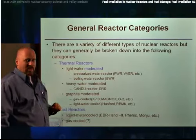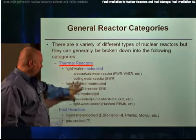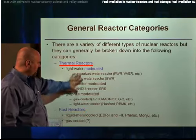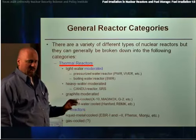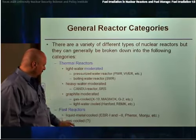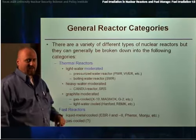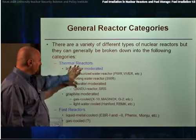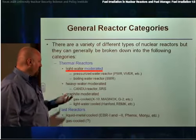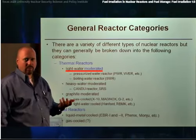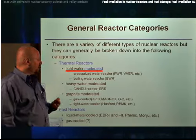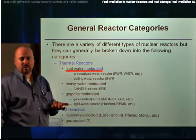Reactors generally break into two main categories: thermal reactors and fast reactors. Thermal reactors principally operate off of neutrons that are moving slowly inside the system. Fast reactors operate off of faster-moving neutrons. In order to slow neutrons down, we use what's called a moderator. The most common moderator used in the world is light water. Neutrons bounce off of the water in the reactor, and every time they bounce off the water, they lose energy and slow down.